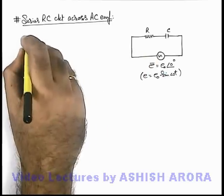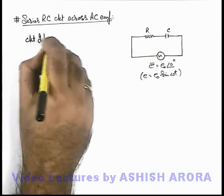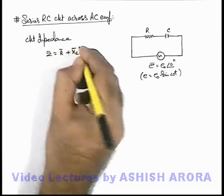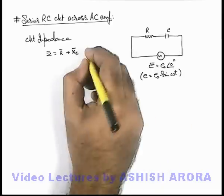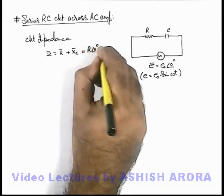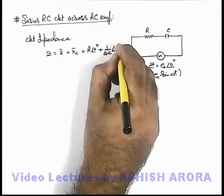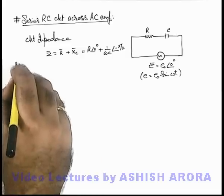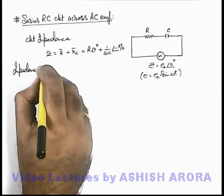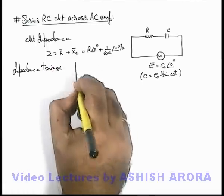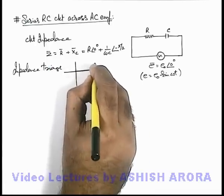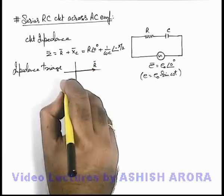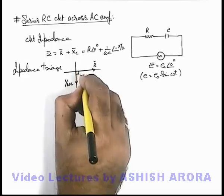If we calculate the circuit impedance, Z can be written as R phasor plus X-C phasor, since these two are in series. This can be given as R at angle zero degree plus X-C, which is 1 by omega-C at angle minus pi by 2. If we draw the impedance triangle or impedance phasor diagram, R is at zero degree and the capacitive reactance phasor 1 by omega-C is at angle minus pi by 2.